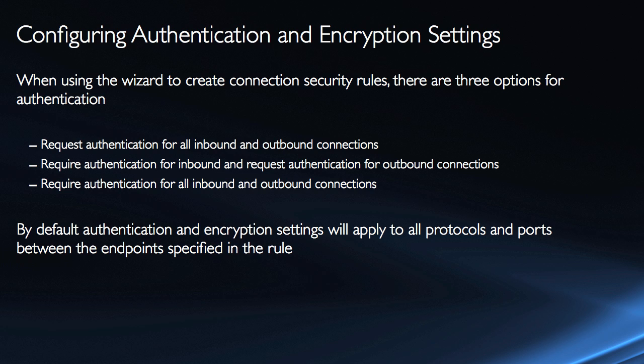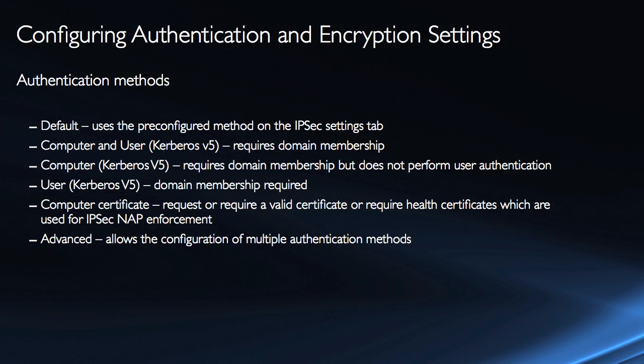By default, when you create a connection security rule, the authentication and encryption settings are going to apply to all protocols and ports between the endpoints specified in the rule. Keep in mind, the firewall rules can allow traffic in on certain ports or from certain programs without securing that traffic — without linking it, in other words, to a connection security rule. The connection security rule itself is not going to ask you for protocols or port numbers; it's simply going to define the endpoints and allow us to secure it.